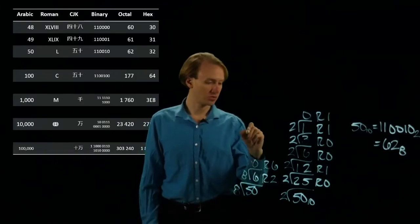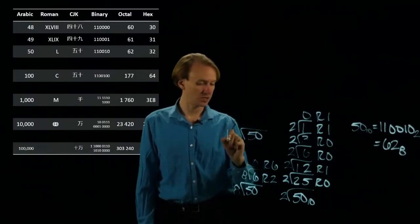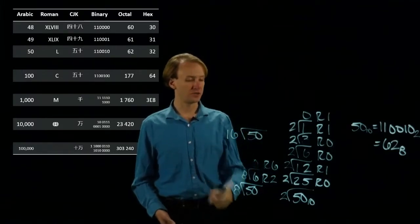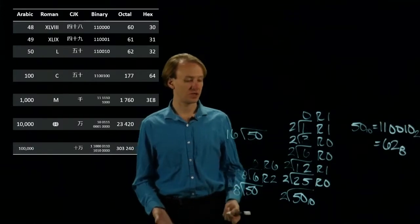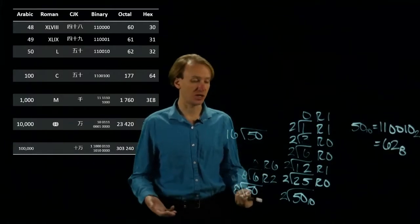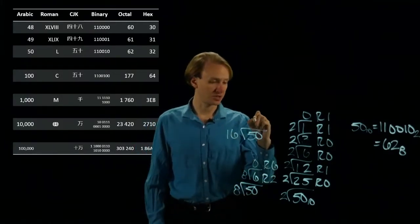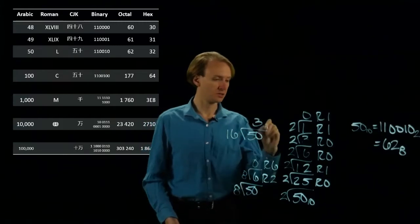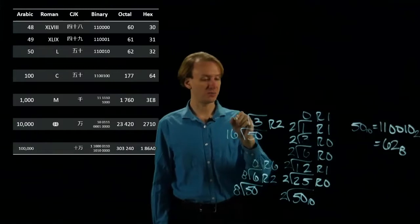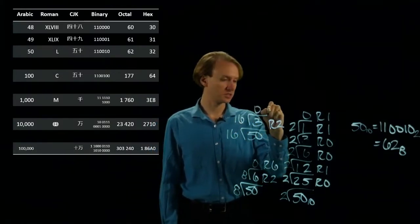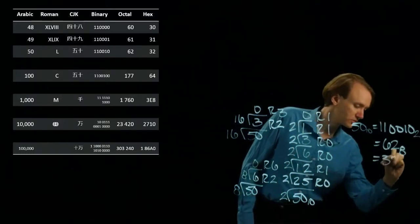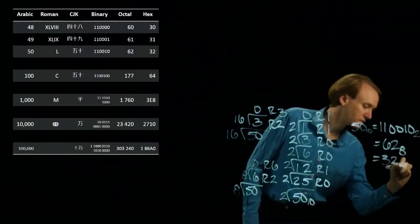For hexadecimal, same thing — start with 50, divide by 16. So 50 divided by 16 should give me 3, because 16 is 2 times larger than 8, and 8 times 6 gave me 48. So I expect 3 times 16 will also give me 48, and that will leave me with a remainder of 2. Then 3 divided by 16 gives me 0 remainder 3. So this is 32 in hexadecimal.